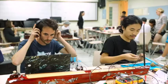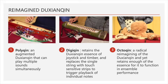Here are the three reimagined Du Chen Qing designed and produced during the co-creation. These were called PolyChin, DigiChin, and OctoChin. Each used Bela to provide real-time sound sampling, sample playback, and pitch modification. PolyChin is an augmented Du Chen Qing that can play multiple sounds simultaneously. DigiChin retains the joystick and timbre essence, and replaces the single string with touch-sensitive strips to trigger playback of individual notes. OctoChin is a radical reimagining, yet retains enough essence to function in ensemble performance. All three retain the essence of joystick and timbre, and PolyChin additionally retains the essence of single-string performance.